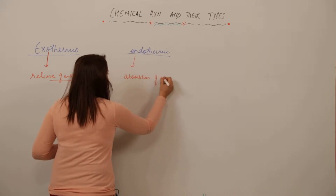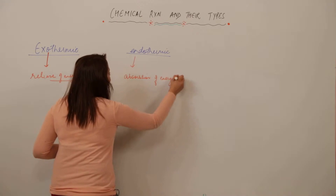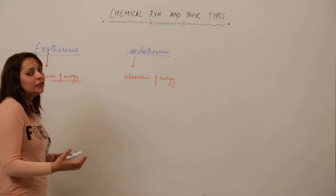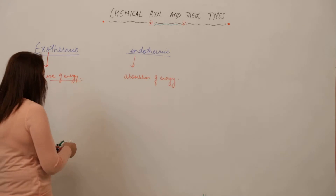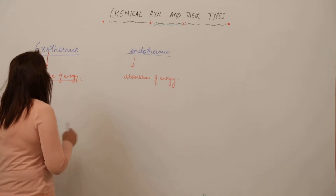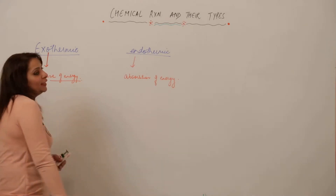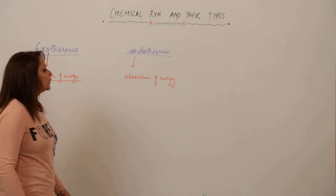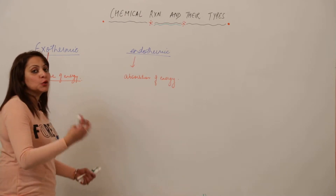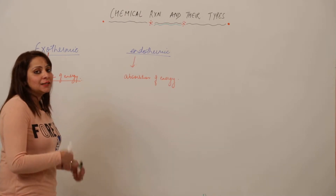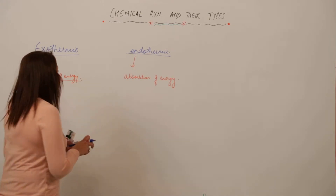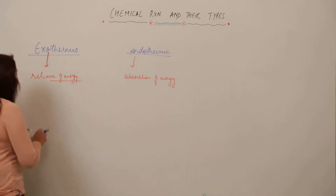'Endo' means internal and 'thermic' means heat energy. So any reaction accompanied by the release of energy is exothermic, and any reaction accompanied by the absorption of energy — meaning it needs energy to occur — is called endothermic. Let me state some examples for you.